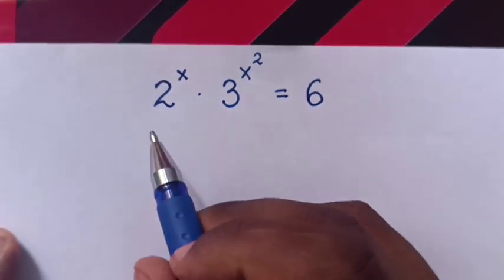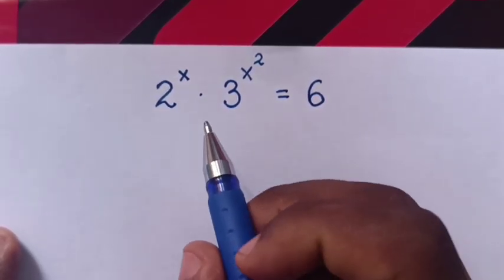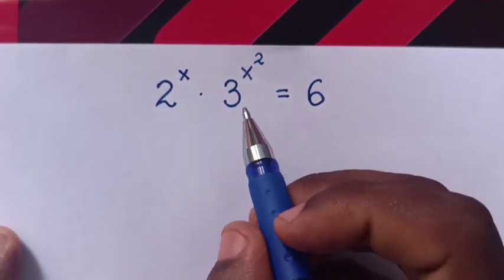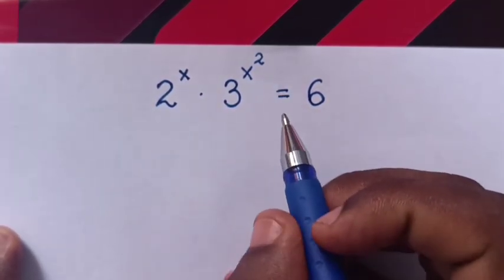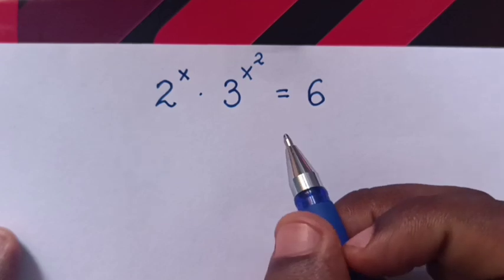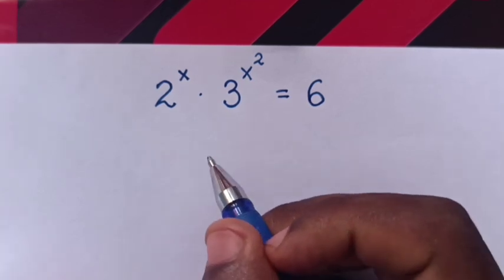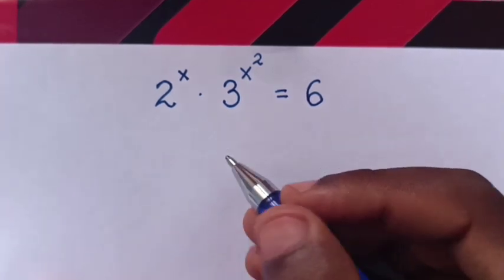Hello. To solve 2 power x times 3 power x squared is equals to 6, find the value of x.